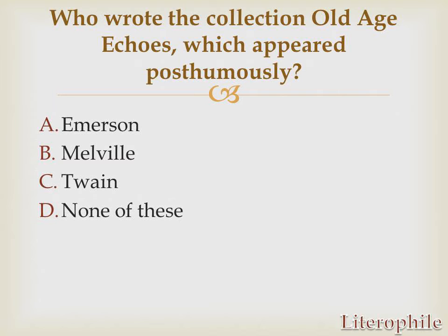The answer to this question is Option D, none of these. Old Age Echoes is a poetry collection written by Walt Whitman — not Emerson, not Melville, not Twain, but Walt Whitman. It was posthumously published. This collection contained a group of 13 poems, out of which 11 poems were previously totally unpublished, and two poems were published as part of the New York Daily Graphic.